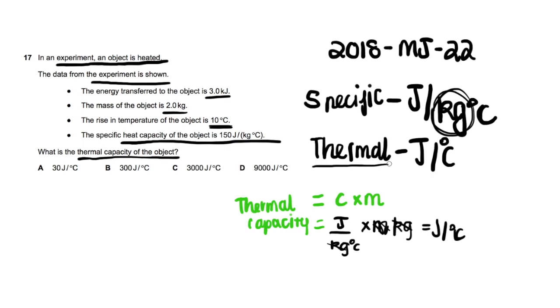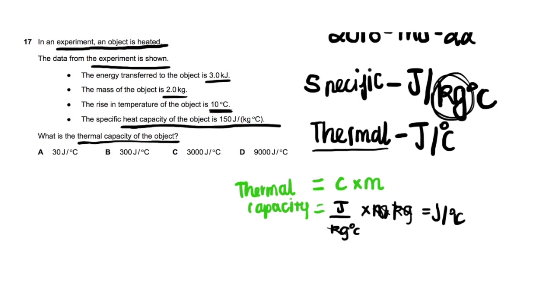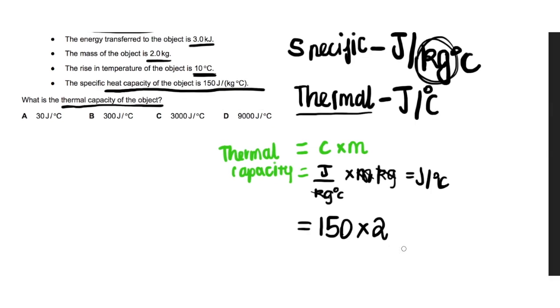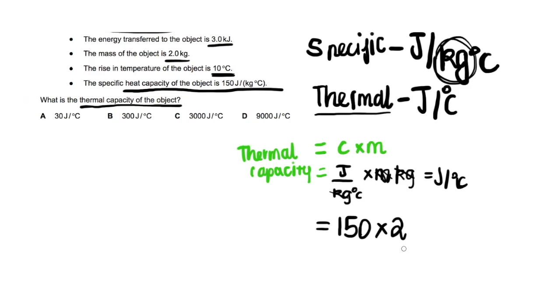To use the formula correctly, you just multiply the specific heat capacity of the object with the mass of the object. So we just multiply the specific heat capacity, that's 150 joules per kg degree Celsius, and the mass which is 2 kg, which gives us 300 joules per degree Celsius. So B is our answer.